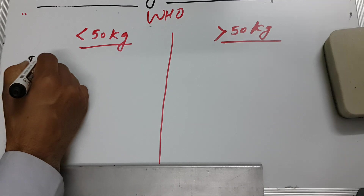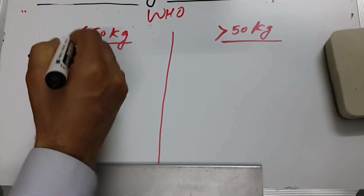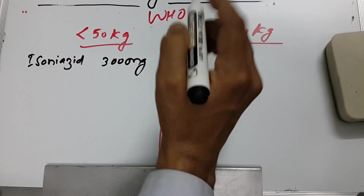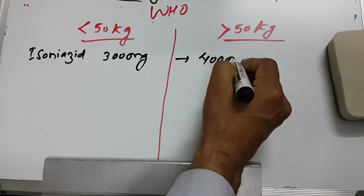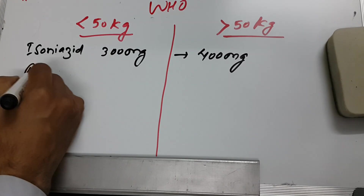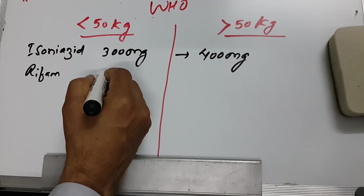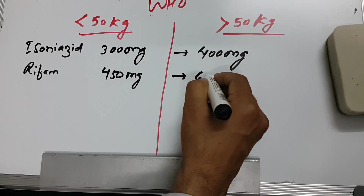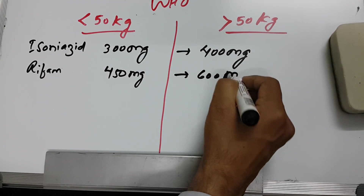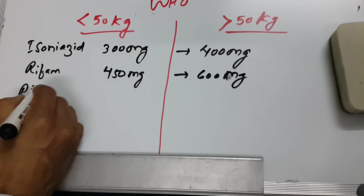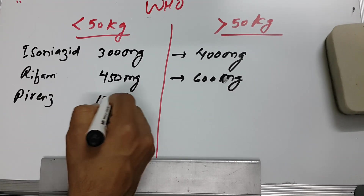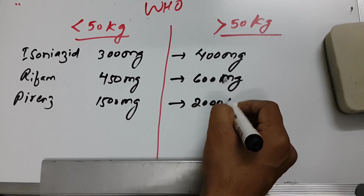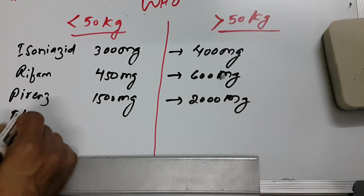Isoniazid: 300 mg if less than 50 kg, 400 mg if more than 50 kg. Rifampicin: 450 mg if less than 50 kg, 600 mg if more than 50 kg. Pyrazinamide: 1500 mg if less than 50 kg, 2000 mg if more than 50 kg.